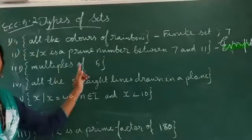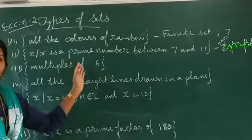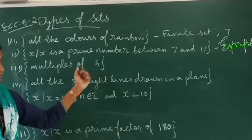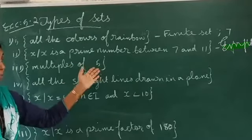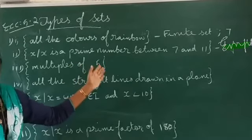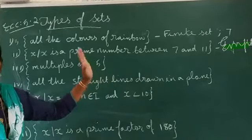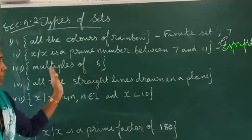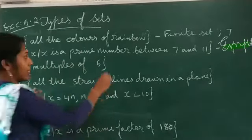Third one: multiples of 5. Multiples of 5 means 0, 5, 10, 15, 20, etc. It does not end. So, it is an infinite set.